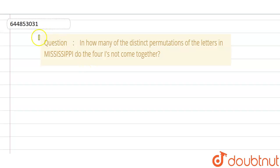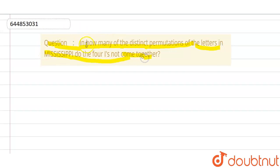The question given to us is: in how many distinct permutations of the letters in Mississippi do the four I's not come together?